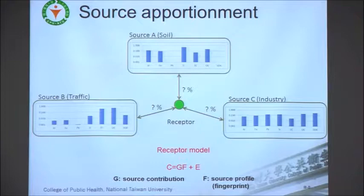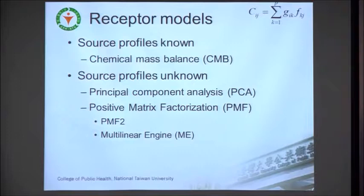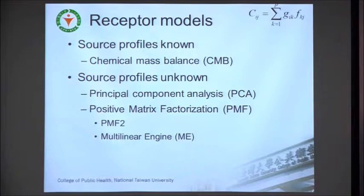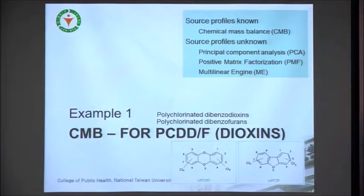There are different types of receptor models. For CMB models, we provide the source profiles and then estimate the contributions. For other models, we can ask the model to retrieve the profiles and contributions simultaneously. In the following slides, I'm going to share some examples of what information we can obtain from the receptor models.